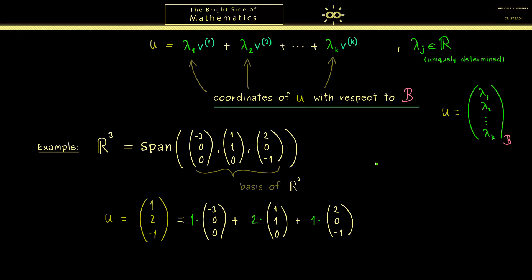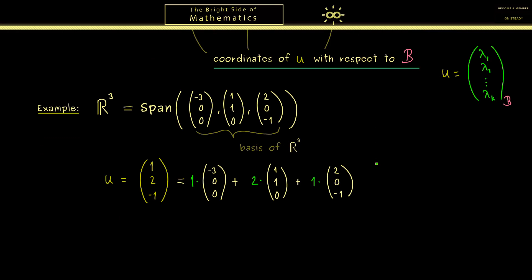Therefore I would say let's also look at another example here. So maybe let's take the vector ũ which is given by 3, 0, 0. And then we immediately see we just need the first vector in the basis here times -1. So the coordinates here are given by -1, 0, 0.